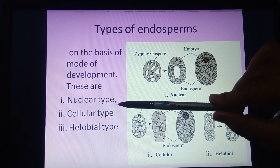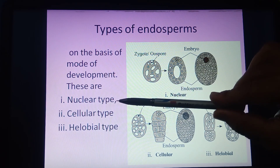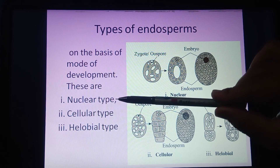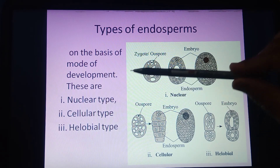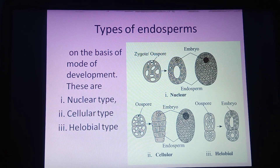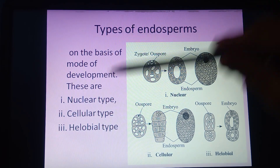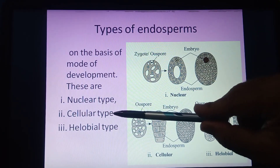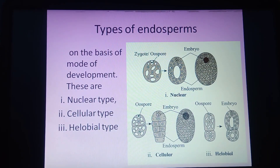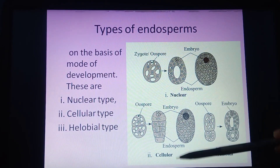In some types, the wall is not developed at all even at the end. Such nuclear endosperm is observed in about 161 different families of angiosperms.